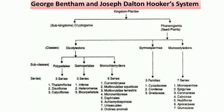It has been proposed by George Bentham and Joseph Dalton Hooker. They have focused mainly on the seed plants, that is gymnosperms and angiosperms. But briefly, they have classified the plant kingdom into two sub-kingdoms: Cryptogamia and Phanerogamia. Cryptogamia includes algae, bryophytes and pteridophytes, while Phanerogamia includes only gymnosperms and angiosperms.